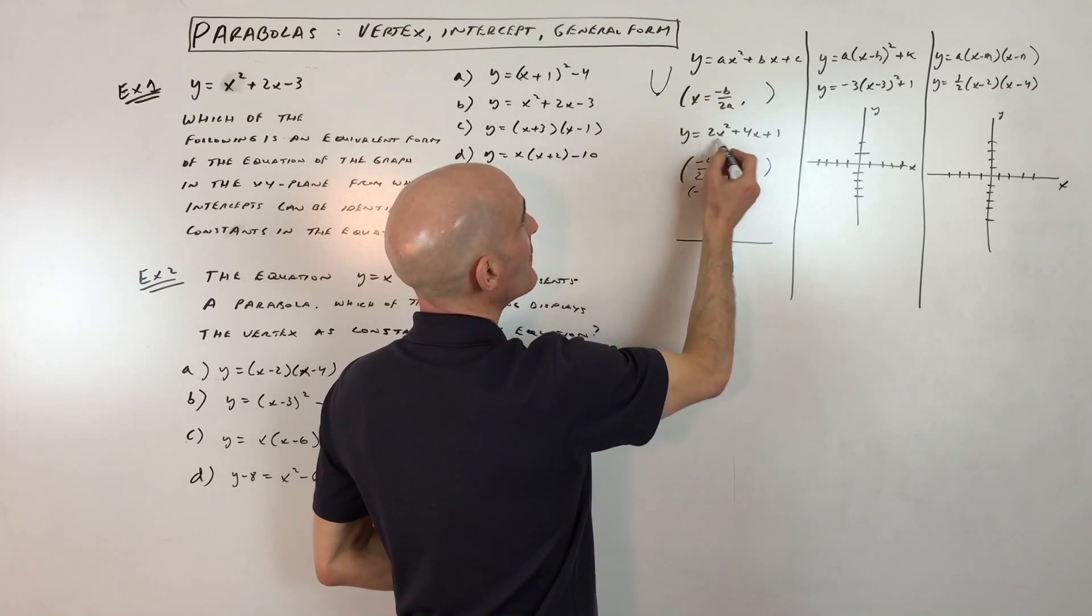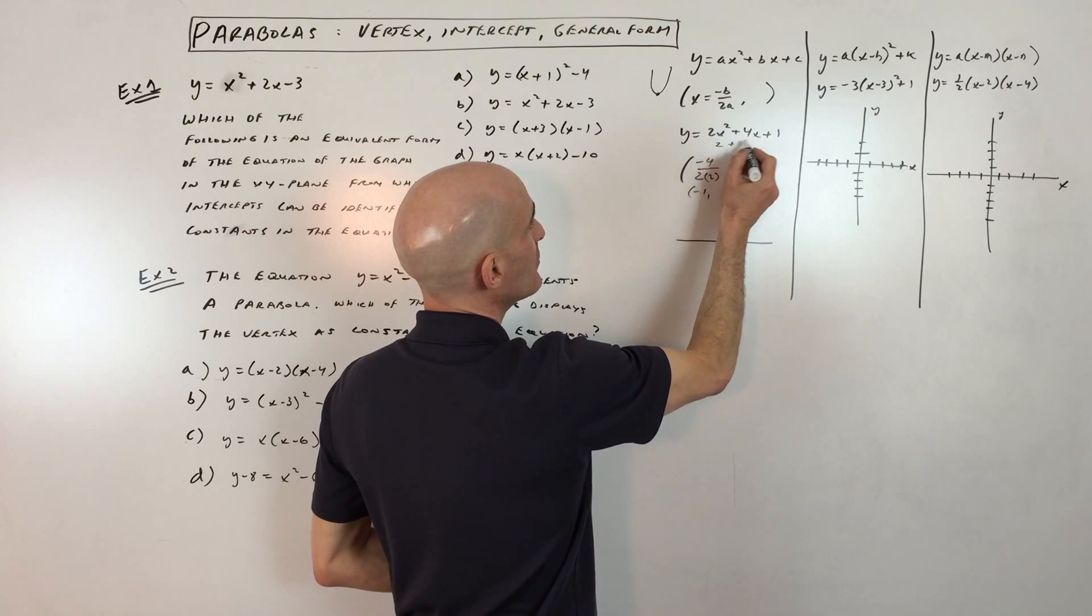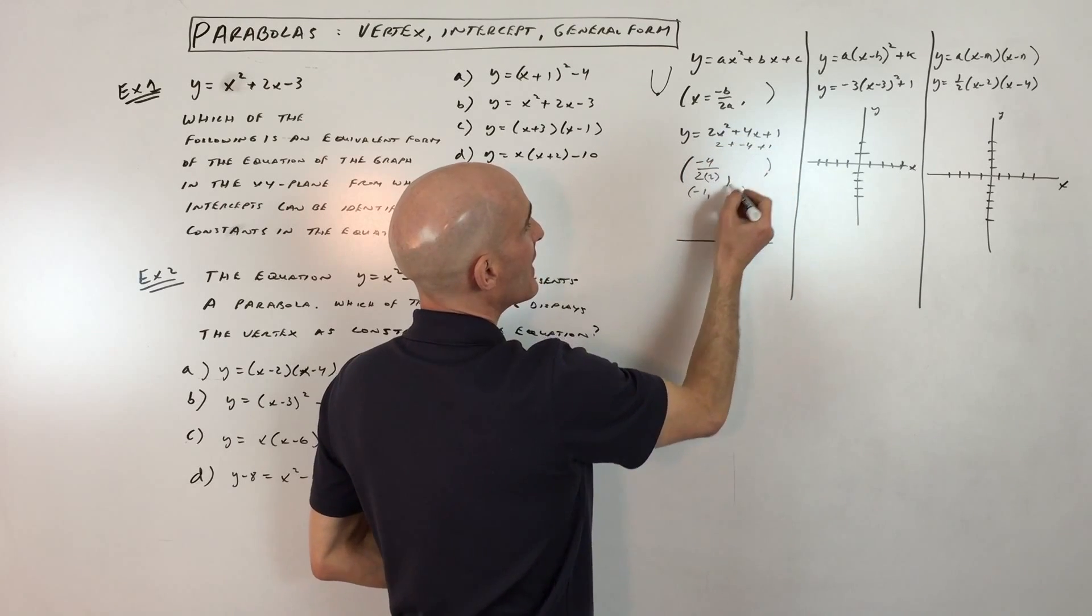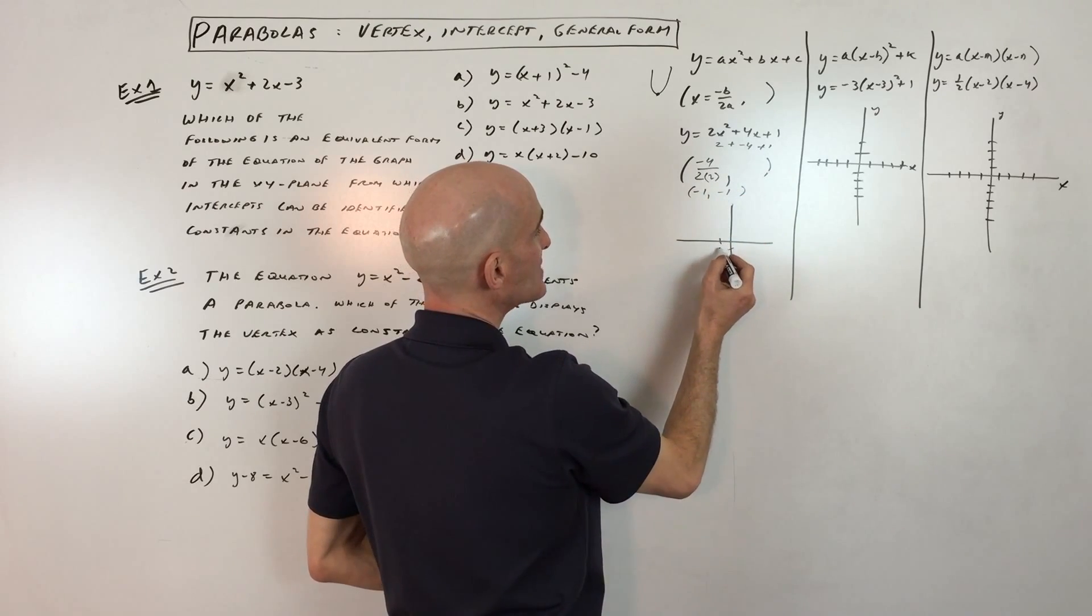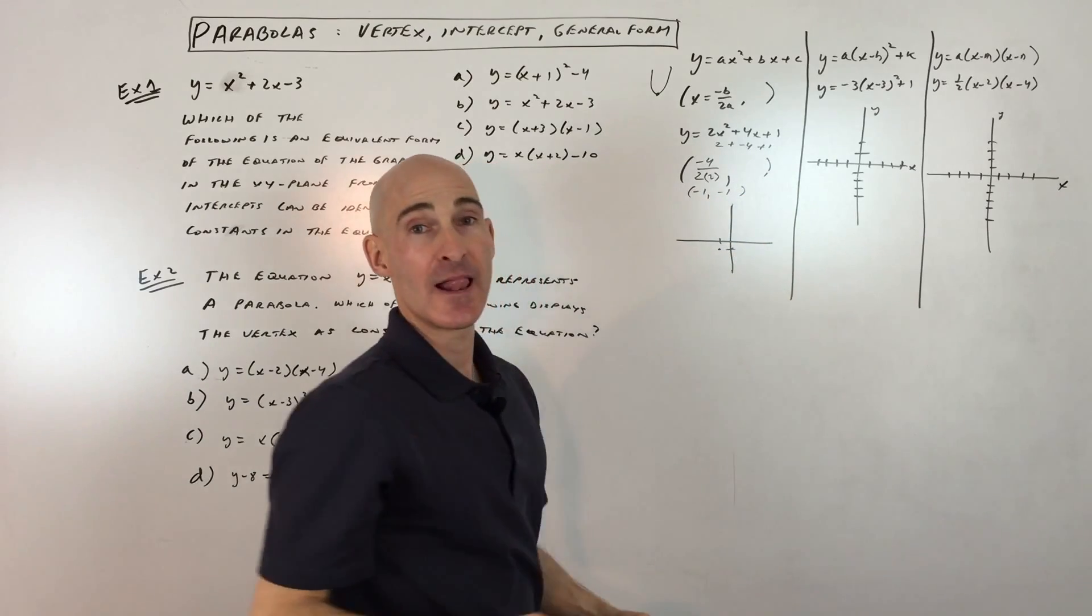Now if I put negative 1 back into my equation for x, I get 2 times negative 1 squared is 2, plus 4 times negative 1 is negative 4, plus 1, that comes out to negative 1. So the vertex here is going to be at negative 1, negative 1.